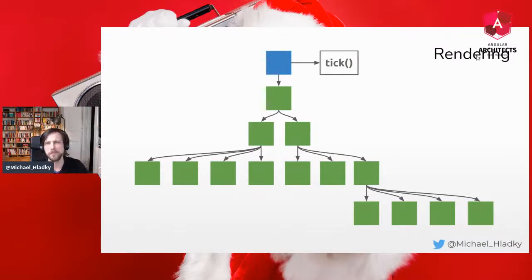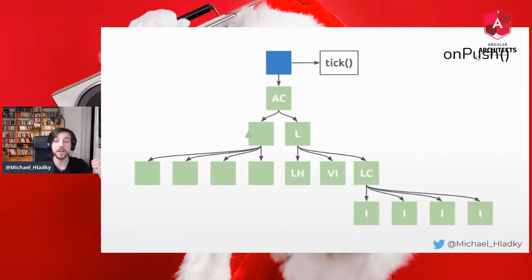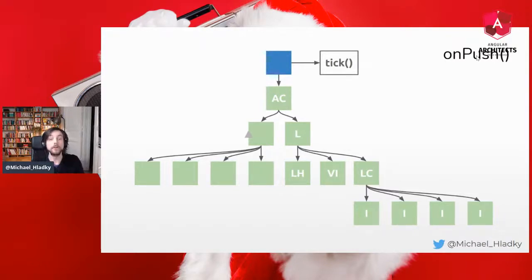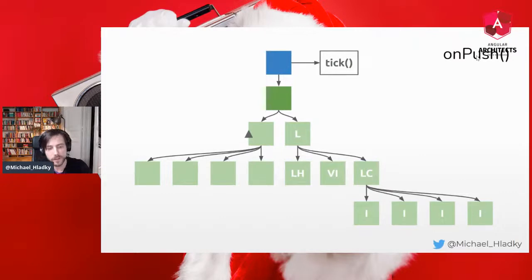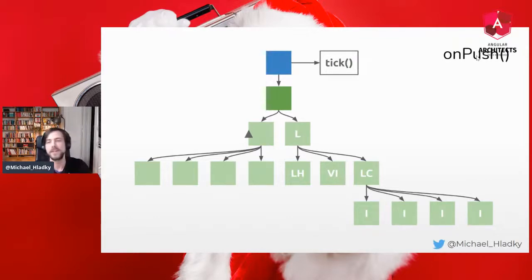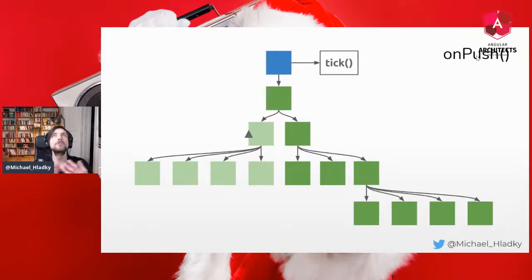Angular came up with change detection OnPush. If you introduce OnPush, it detects the difference between the previous and current assigned value of a binding. If the value hasn't changed, the component enters a 'don't check me' state. OnPush basically introduces the concept of immutability to your data flow, helping to detect changes on a component level.